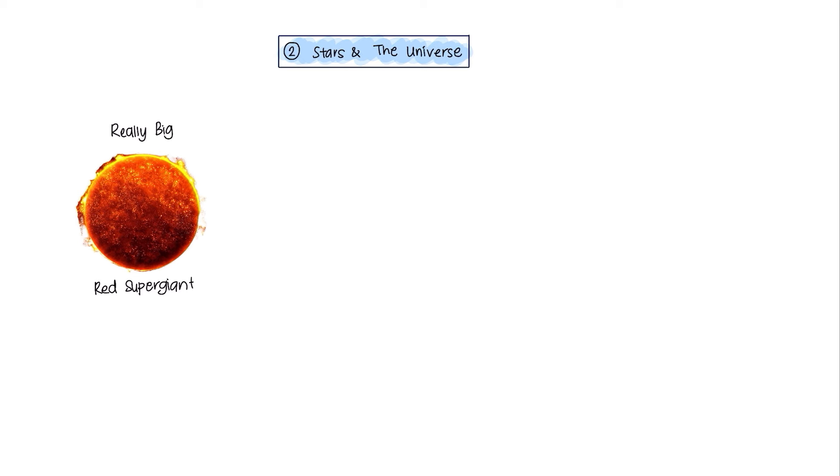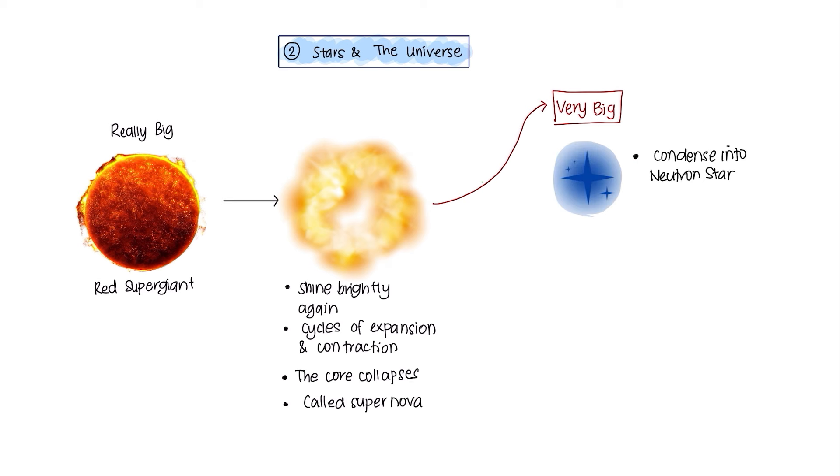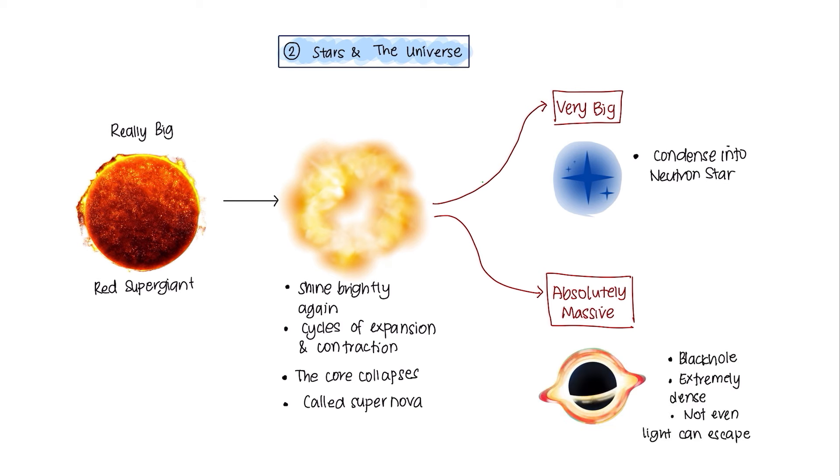Let's now take a look at the red supergiant. Red supergiant, on the other hand, will start to shine brightly again because of nuclear fusion. But, after several cycles of expansion and contraction, the core of the star will collapse and cause a gigantic explosion. We call this explosion a supernova. And what happens next, again depends on how big the star was. If it was just a very big star, it would condense into a neutron star. And in the case of the absolutely massive stars, the neutron star that forms at the center will continue to collapse under the force of gravity until it forms a black hole.